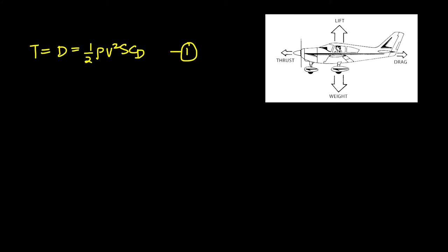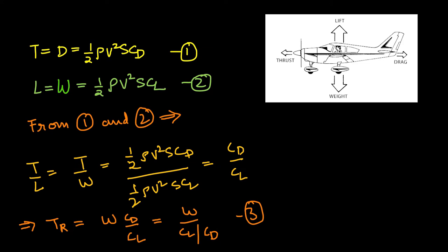In our previous video we saw that for level flight, thrust will be equal to drag, and drag is equal to half rho v squared S CD. Lift will be equal to weight, where lift equals half rho v squared S CL. Using these two equations, we may say that thrust divided by lift equals thrust divided by weight, which is also equal to half rho v squared S CD divided by half rho v squared S CL.